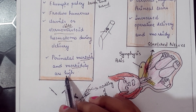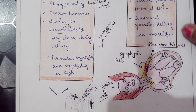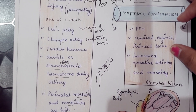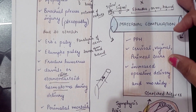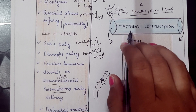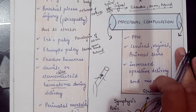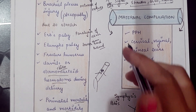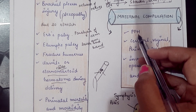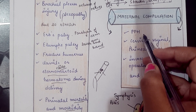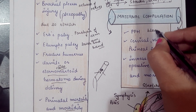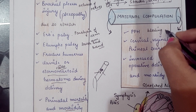Perinatal mortality and morbidity rate is high in shoulder dystocia. Under maternal complications, the first is postpartum hemorrhage (PPH) — bleeding which occurs after delivery of the baby.